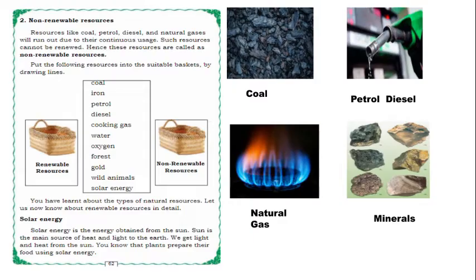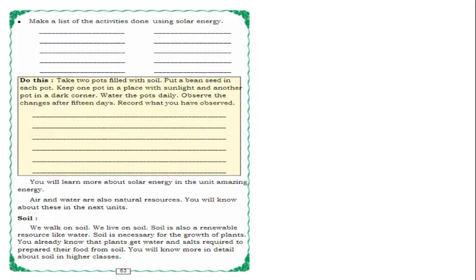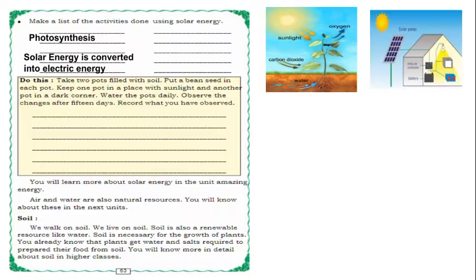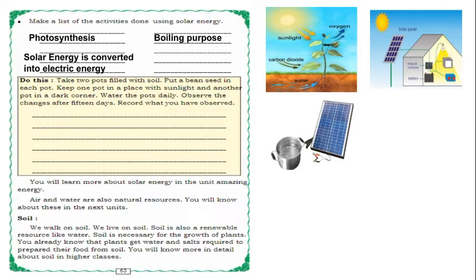Solar energy is the energy obtained from the sun. The sun is the main source of heat and light to the earth. We get light and heat from the sun. Plants prepare their food using solar energy. Activities using solar energy include photosynthesis to prepare food, converting solar energy into electrical energy, boiling, cooking, and making light.